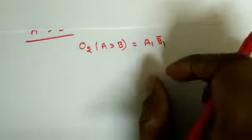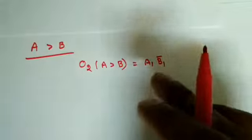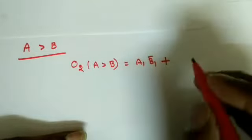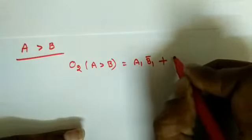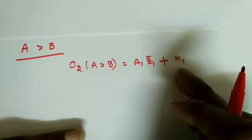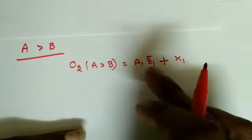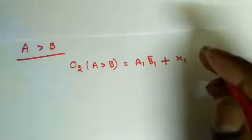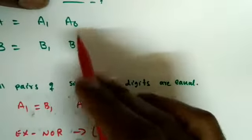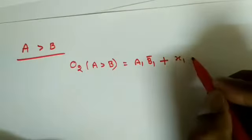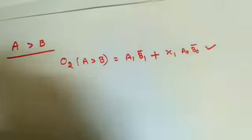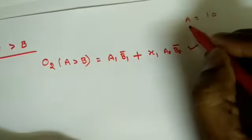Once the MSB condition A1·B1_bar is satisfied we can say A is greater than B. If both MSBs are equal, X1 equals one, and we must check the next bits A0 and B0. If A0 is greater than B0 that is represented as A0·B0_bar. So the full expression for O2 is: A1·B1_bar + X1·A0·B0_bar.